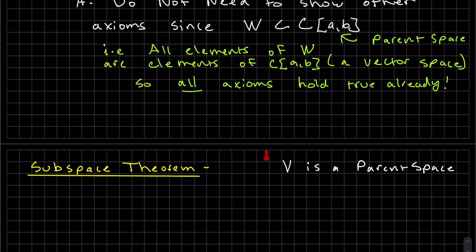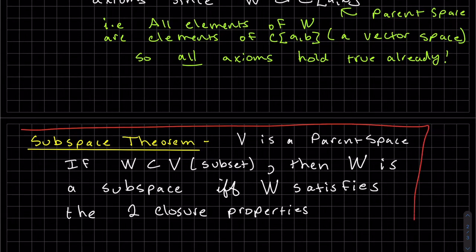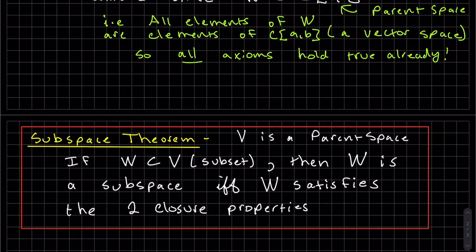This brings us to our subspace theorem. Let's say V is a parent space. It basically says if V is the parent space, the bigger set, and W is a subset, then W is a subspace if and only if W satisfies the two closure properties. You have to show that it satisfies both closure properties, and then you can say it's a subspace.